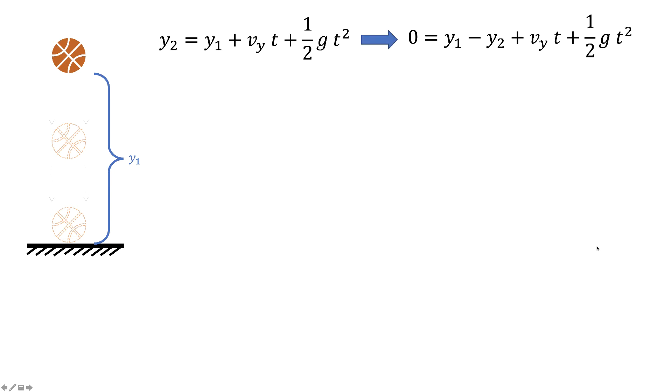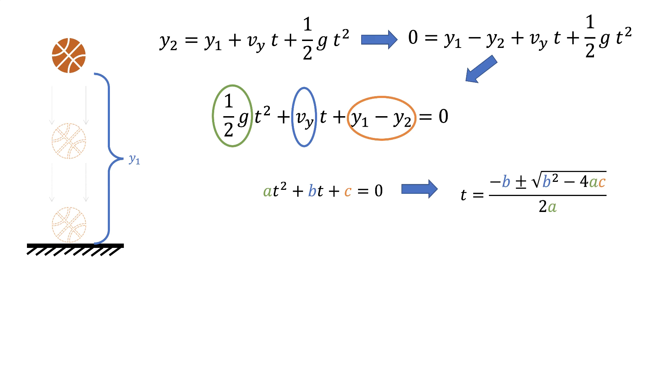Now what we have here is simply a quadratic function. Here, a is 1 over 2g, b is vᵧ, and c is y₁ minus y₂. We then find the roots of the quadratic function. We then plug a, b, and c from the kinematic formula.